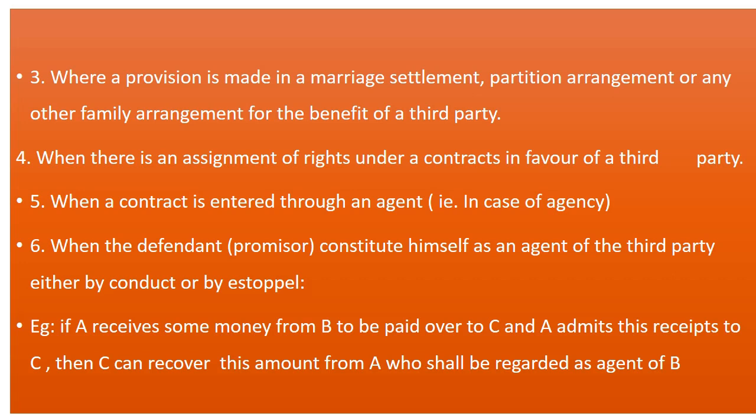Point number six: when the defendant or promisor constitutes himself as an agent of a third party, either by conduct or by estoppel. For example, if A receives some money from B to be paid over to C, and A admits this receipt to C, then C can recover this amount from A, who shall be regarded as agent of B. So these are the exceptions to privity of contract. Usually there are 12-mark questions on privity of contract.